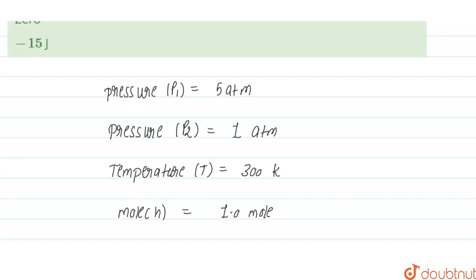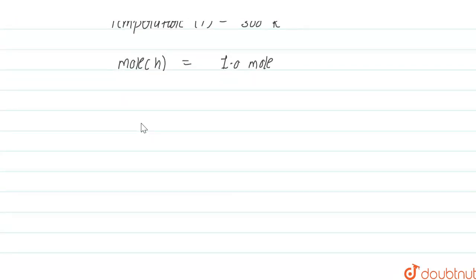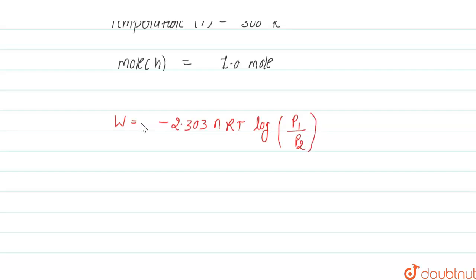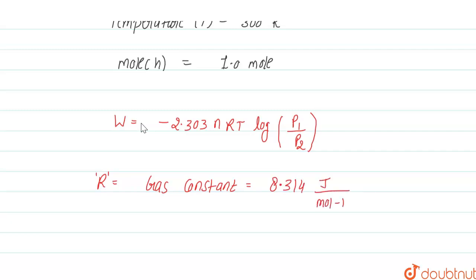For the isothermal reversible process, the formula for calculating the work done is: W = -2.303 nRT log(P1/P2), where n is the number of moles, T is the temperature, and R is the universal gas constant with a value of 8.314 joule per mole Kelvin.